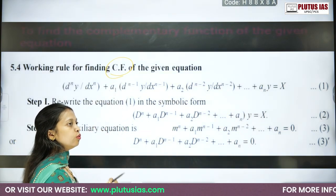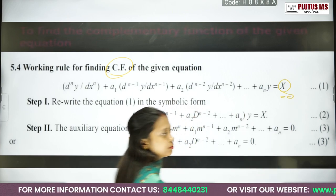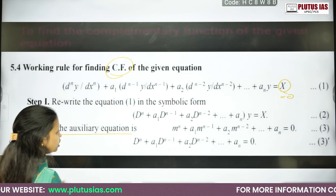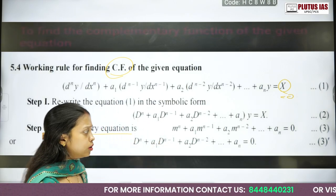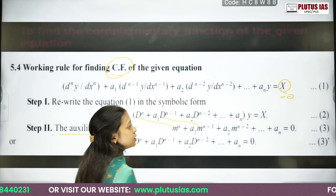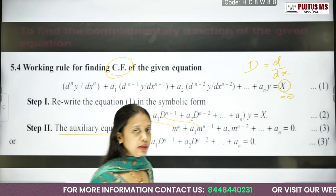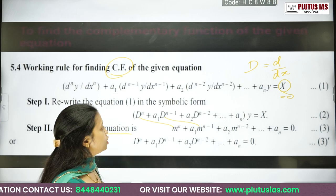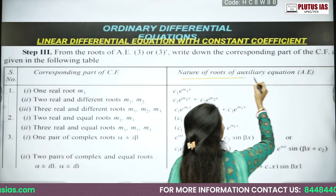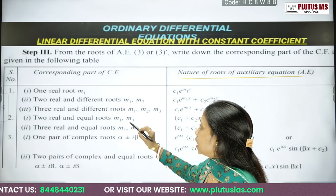This is the working rule for finding CF. We know when we need to find just CF — CF will be the general solution if capital X is 0. What it says: rewrite the equation in symbolic form using the operator D, where capital D is the operator d/dx. Find the auxiliary equation, and then change all capital D to small m. The nature of the roots of the auxiliary equation will tell you what kind of solution you will have.